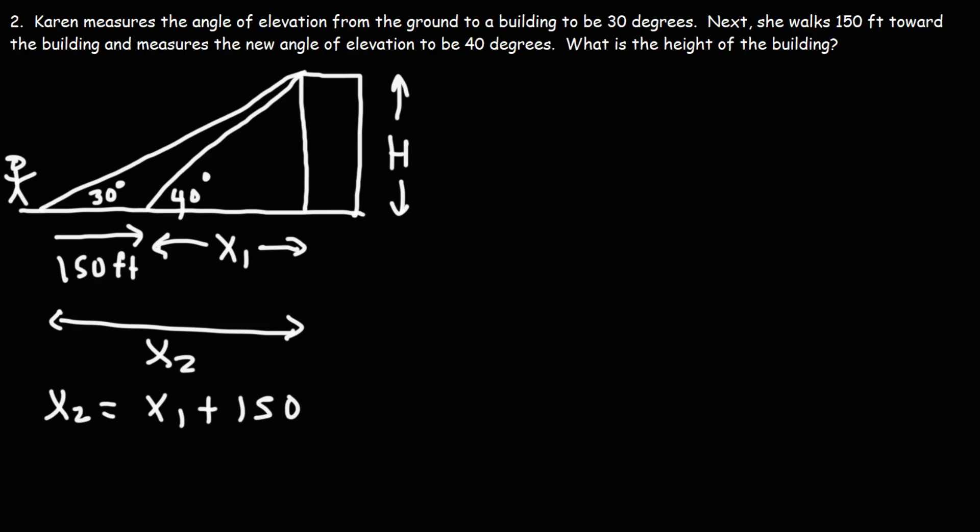Now let's focus on the small triangle, just this part. Tangent 40 is equal to the opposite side h divided by the adjacent side x1. That's the first formula that we can write.